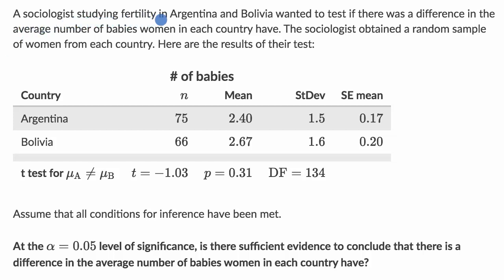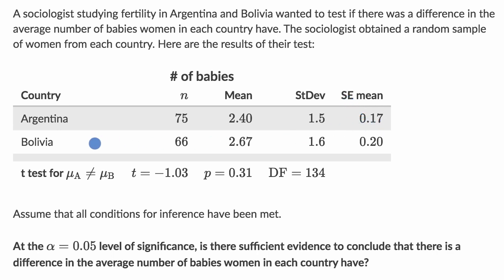A sociologist studying fertility in Argentina and Bolivia wanted to test if there was a difference in the average number of babies women in each country have. The sociologist obtained a random sample of women from each country. They took a sample of 75 women in Argentina, who had a mean of 2.4 babies each with a standard deviation of 1.5, and then the standard error of the mean was 0.17. They then calculated similar statistics for Bolivia.